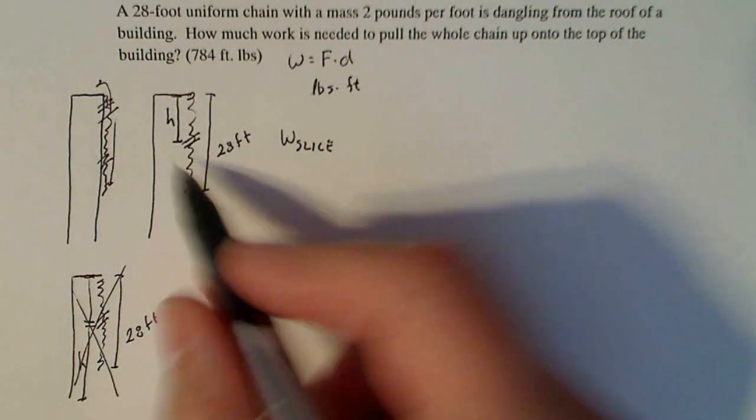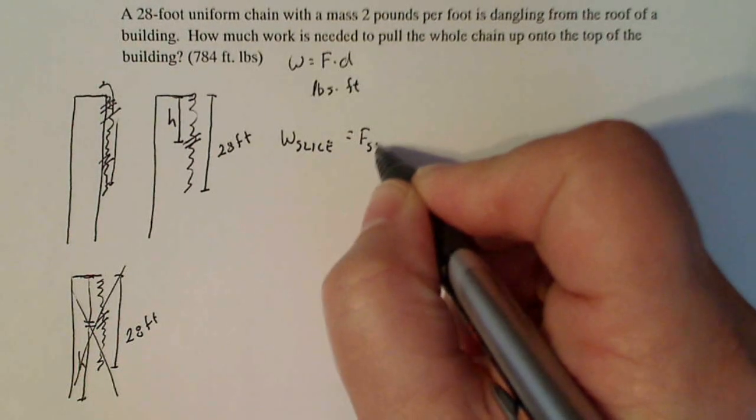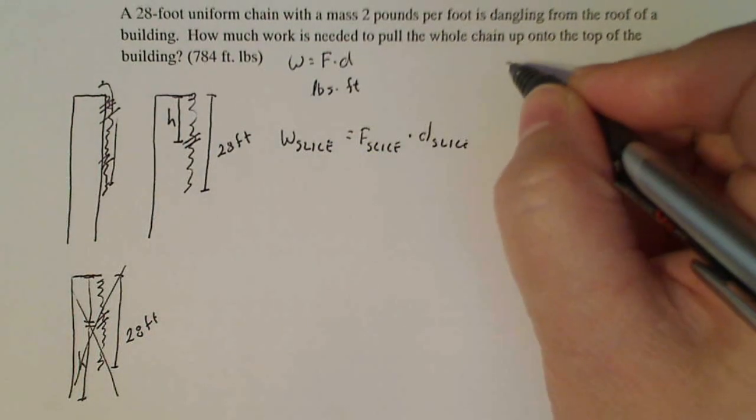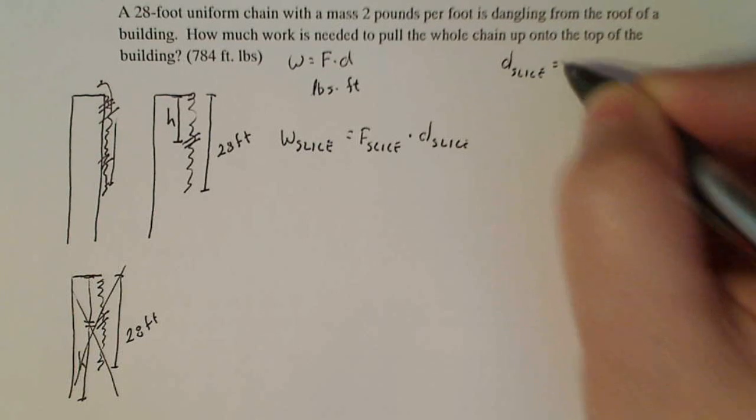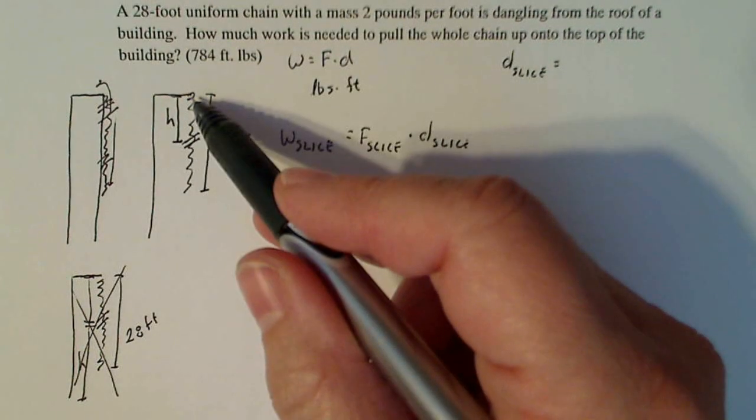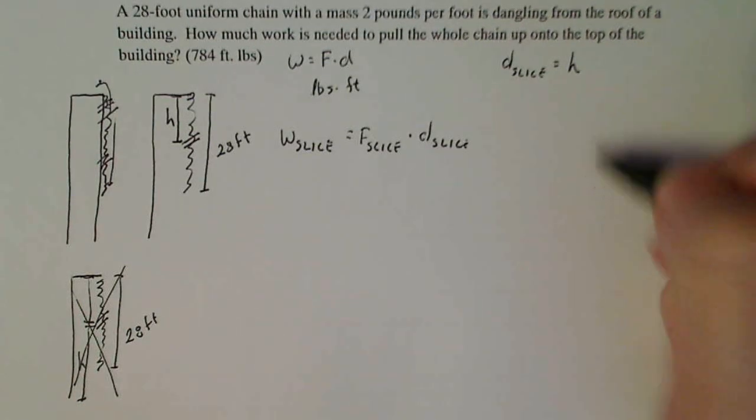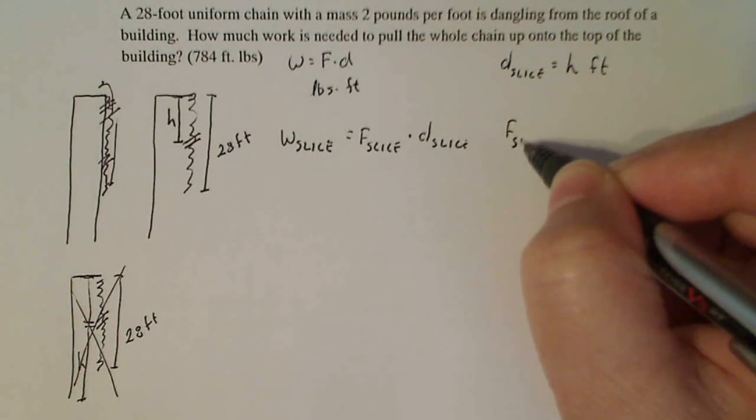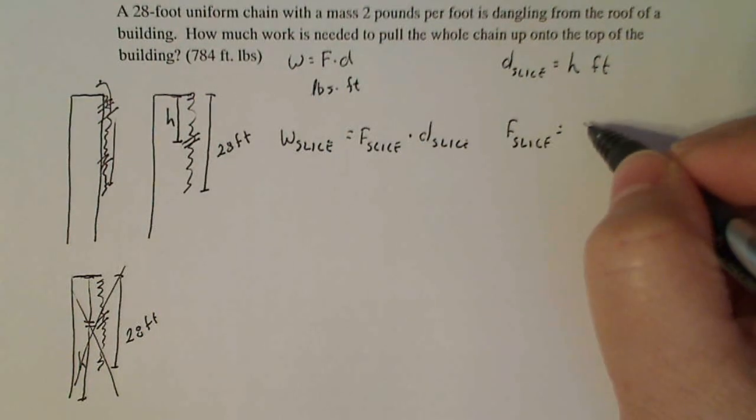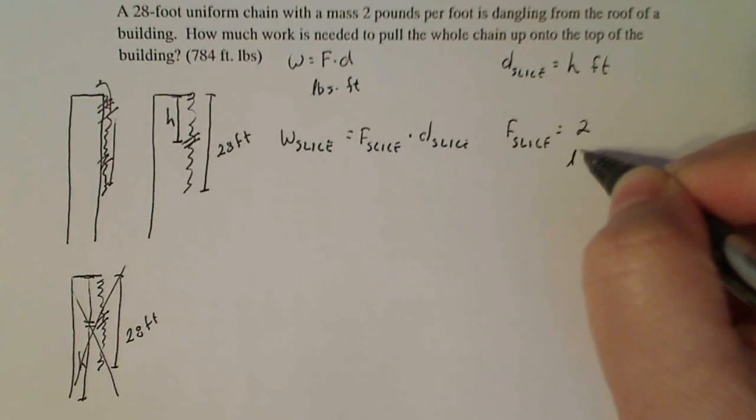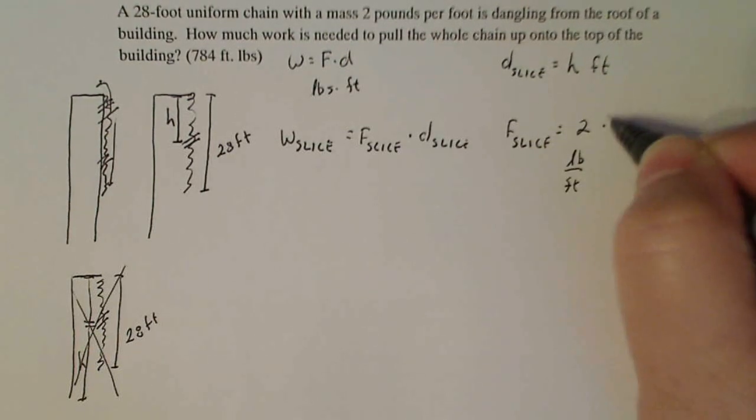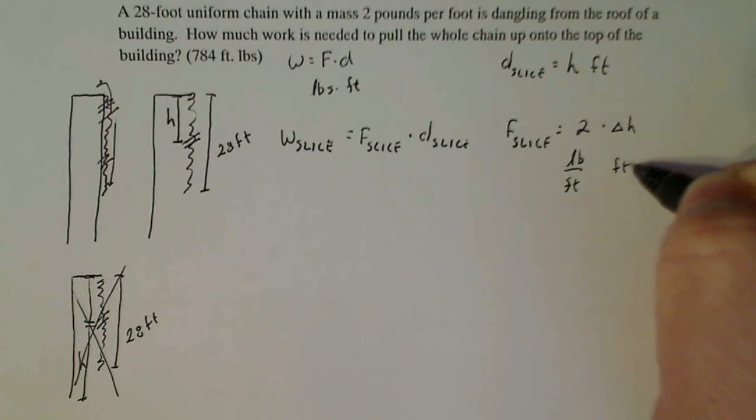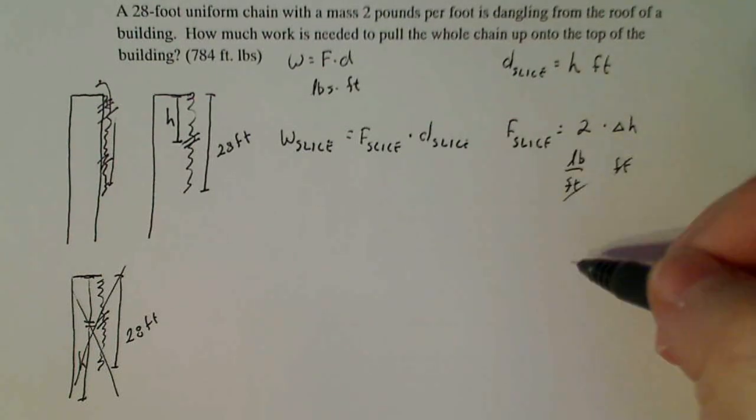All right, back to this problem. We have to calculate the work on the slice. So that's the force on the slice times the distance the slice has to move. So let's do the distance the slice has to move. And it's pretty obvious with the way that I built this, that slice has to move a distance of H to get to the top. So that's H feet. Now I have to talk about the force on that slice. So I know that particular slice is two pounds per foot. And I know the length of that slice is real thin, but it's going to be the change in H. And that's feet. So that just gives me pounds in the end, which is what my force is going to be.